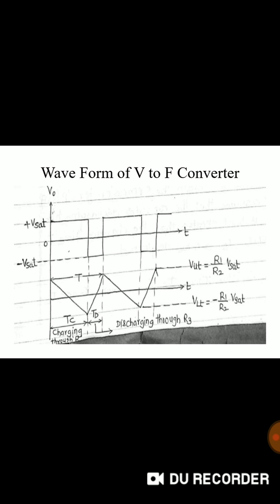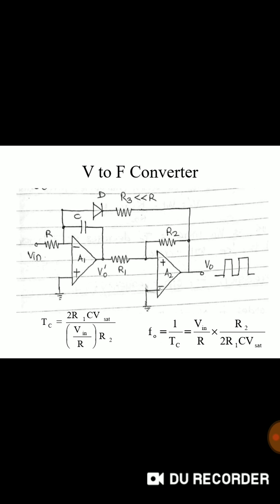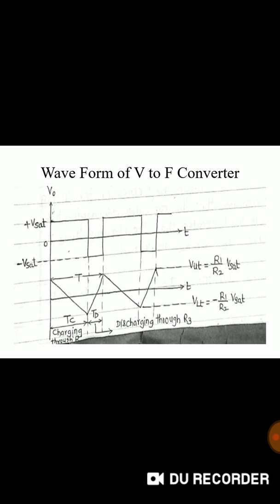As output is equal to minus Vsat, diode D1 will be forward biased. The capacitor will discharge through D and resistance R3. The integrator output will now increase linearly from minus R1 by R2 into Vsat to R1 by R2 into Vsat as shown in the diagram.